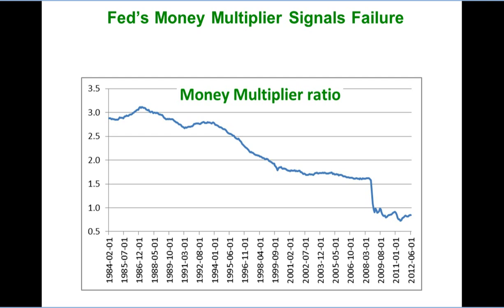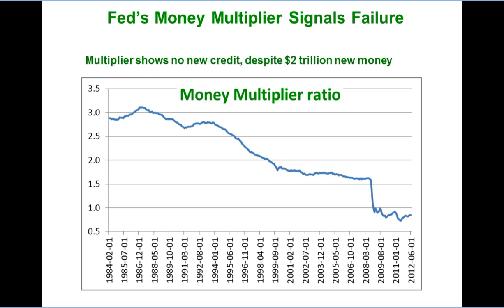It was as high as 3 times 30 years ago. But as you can see, the ratio fell below 1 in 2008 and has remained around that level for nearly 4 years now. This means that the money supply, which consists of money and credit, is actually less than the entire monetary base.